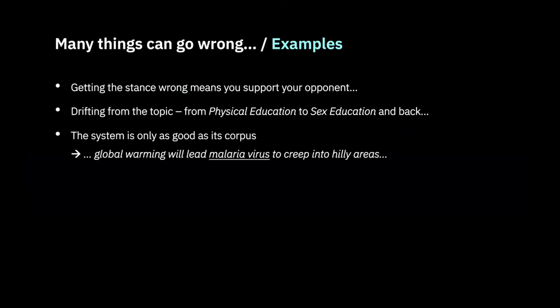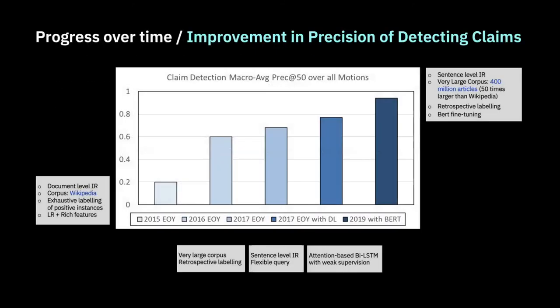For instance, if we get the stance wrong, we end up supporting our opponent. In the argument retrieval component, the most common error we've seen is topic drifting. And finally, the system is only as good as its corpus — if there's no high-quality content in our large-scale corpus for a specific topic, there's no chance to construct high-quality speech during the debate. We started addressing these problems one at a time from 2015 to 2020.